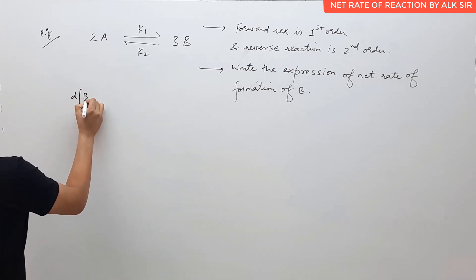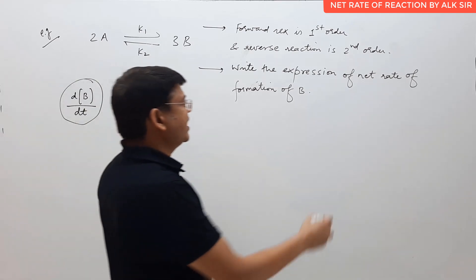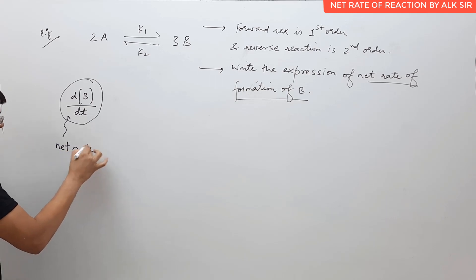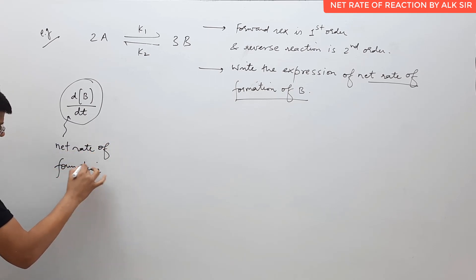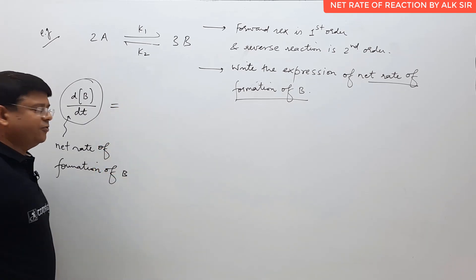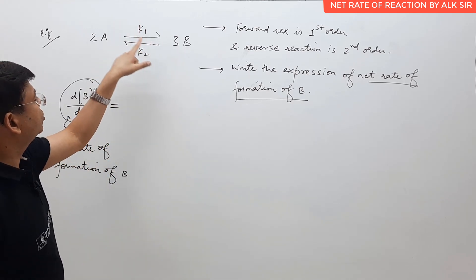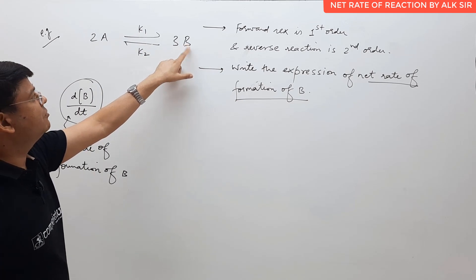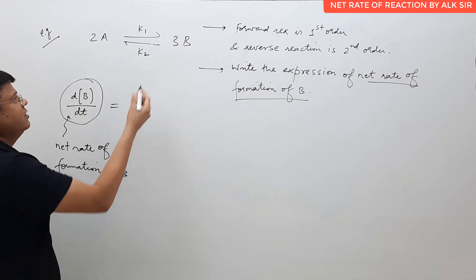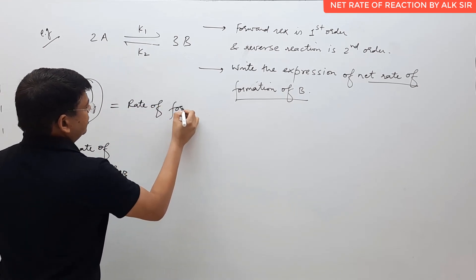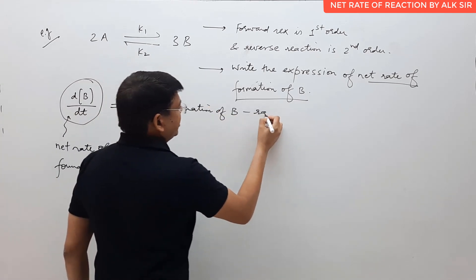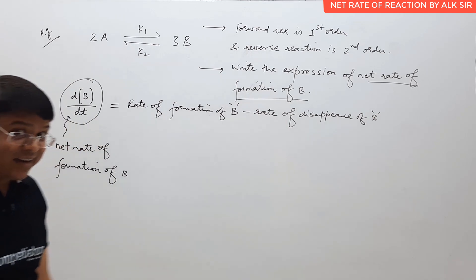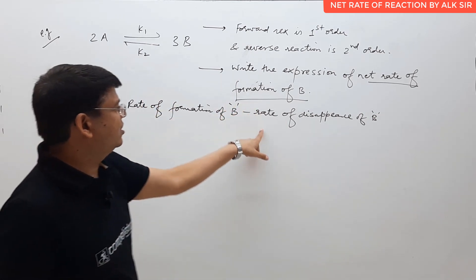What is dB/dt? We are asked to write the net rate of formation of B. The net rate of formation of B is: rate of formation of B minus rate of disappearance of B. B is forming through the forward reaction with rate constant K1, and also disappearing through the backward reaction with rate constant K2. So the net rate of formation of B equals rate of formation of B minus rate of disappearance of B.